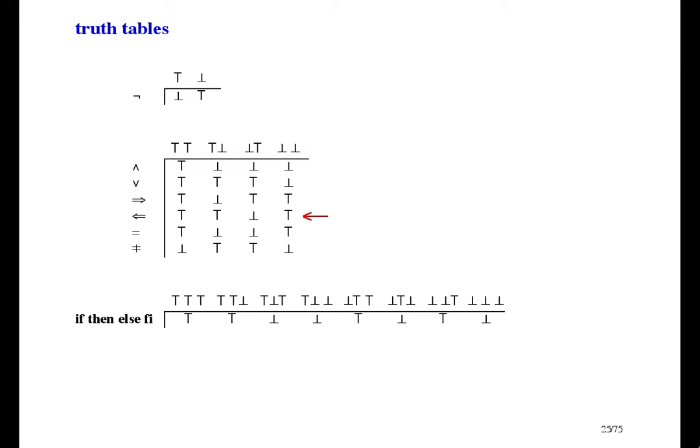The equal operator is pretty obvious, and so is the unequal operator — its result is true just when its operands are unequal. Some people like to call this operator exclusive or, because its result is true when either the left operand or the right operand is true, but not both of them. The if-then-else is easy to remember: if the if-part is true, then the result is the same as the then-part; if the if-part is false, then the result is the same as the else-part. The 'if' at the beginning and the 'fi' at the end are like opening and closing brackets for this operator.